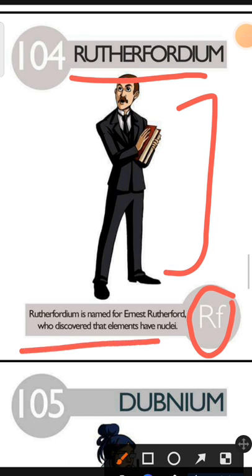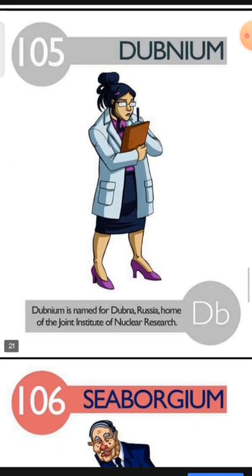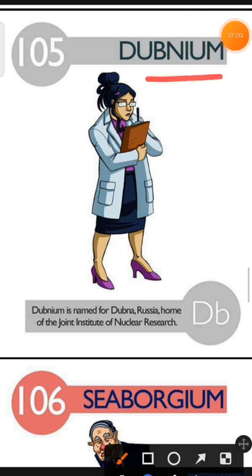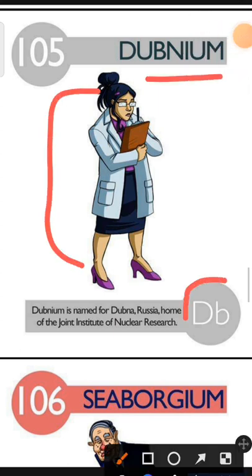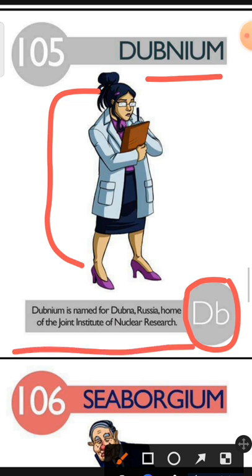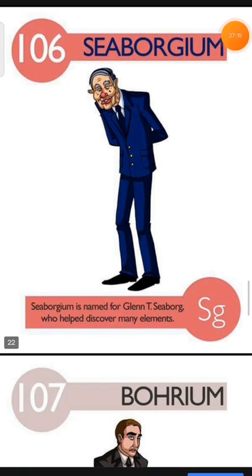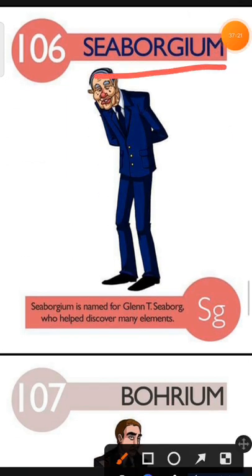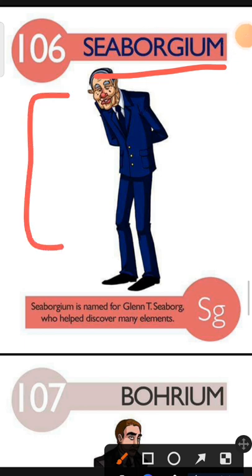Element number 105 is Dubnium. The characteristic of Dubnium is: Dubnium is named for Dubna, Russia, home of the Joint Institute of Nuclear Research. Element number 106 is Seaborgium. The characteristic of Seaborgium is: Seaborgium is named for Glenn T. Seaborg who helped discover many elements.